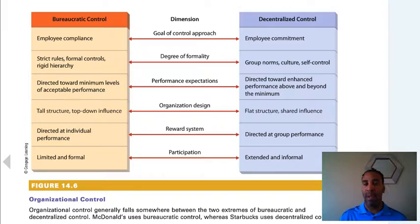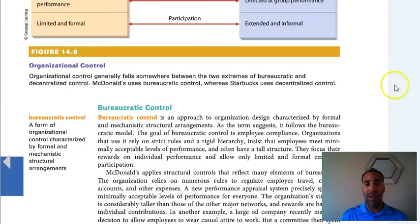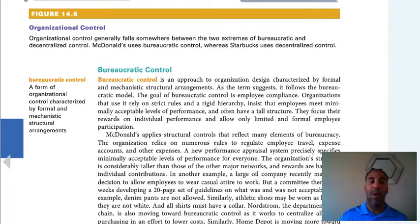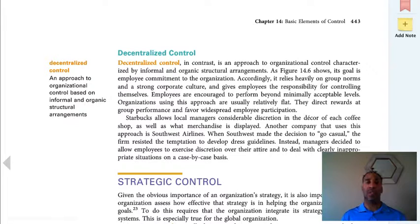Organizational control generally falls somewhere between the two extremes of bureaucratic and decentralized control. McDonald's uses bureaucratic control, whereas Starbucks uses decentralized control — both very successful, so you can't say one structure is better than the other, but you can say one structure fits one company better. Bureaucratic control is characterized by formal and mechanistic structural arrangements. Decentralized control is based on informal and organic structural arrangements.